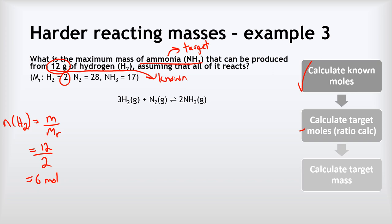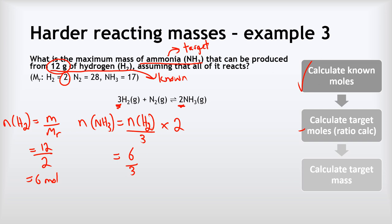Now the ratio calculation for our target: the number of moles of NH3 equals the number of moles of H2 divided by 3 — because there are 3 H2's in the equation — multiplied by 2 — because there are 2 NH3's in the equation. So 6 divided by 3 is 2, multiplied by 2 gives us 4 moles of NH3.